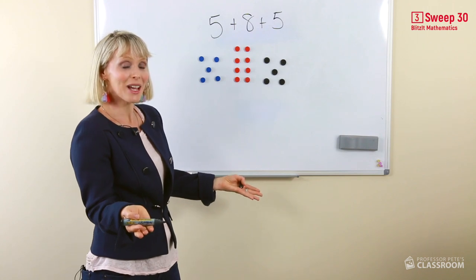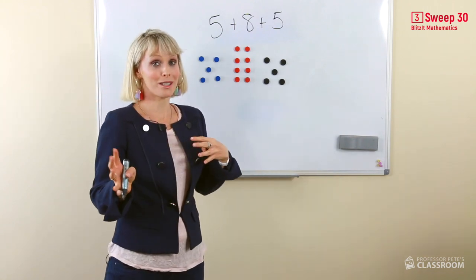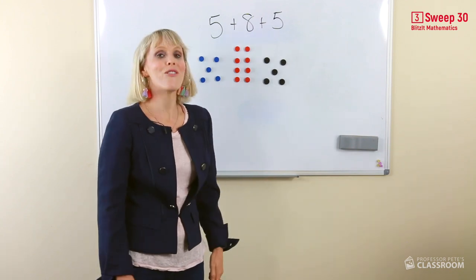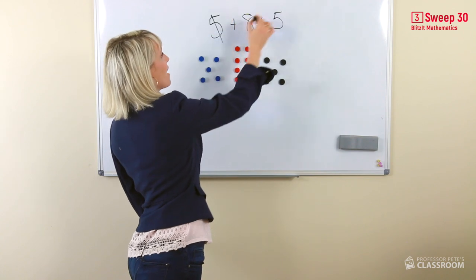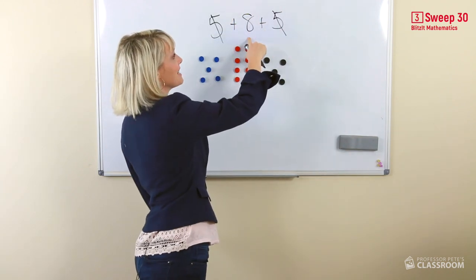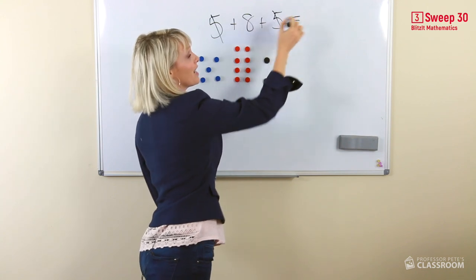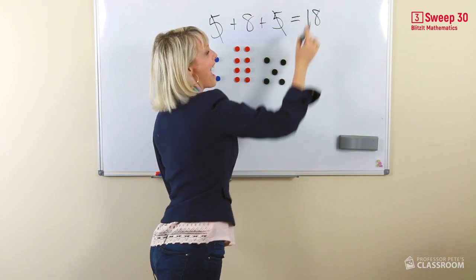We just need to make 10. When you come across numbers, and there's multiple numbers, and you're unsure what to do, find what you know. Let's make a 10. Well, I know that 5 and 5 equals 10. Therefore, 10 and 8 is always going to be a teen number. Equals 18.